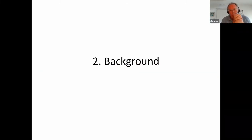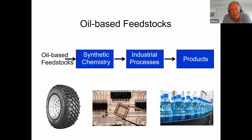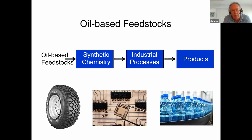Now let me give some more general background. This slide shows the basic industrial model which has existed essentially since the middle of the 19th century, and has been the basis of much of our industry for about 150 years. It's based on oil-based feedstocks, which feed through synthetic chemistry to industrial processes and products. Applications include synthetic rubber — all car and lorry tires — as well as the microelectronics and plastics industries. You can think of this as a high-carbon model, and we're going to talk about low-carbon models in a moment.